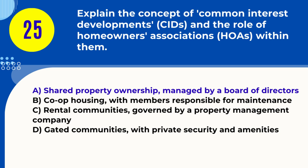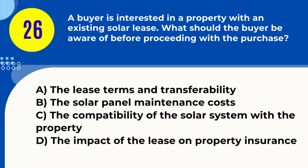Question 26. A buyer is interested in a property with an existing solar lease. What should the buyer be aware of before proceeding with the purchase? A. The lease terms and transferability B. The solar panel maintenance costs C. The compatibility of the solar system with the property D. The impact of the lease on property insurance. Answer: A. The lease terms and transferability. Explanation: Buyers should review the terms of the solar lease, including its duration, costs, and whether it can be transferred with the property sale.